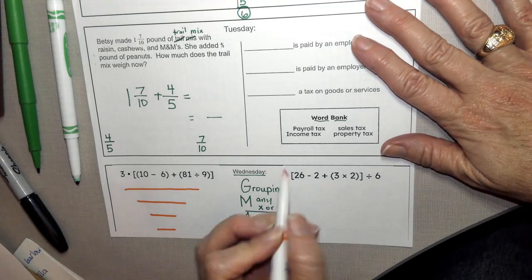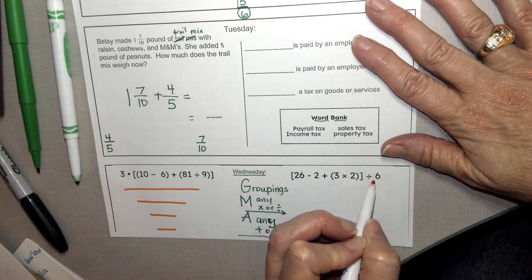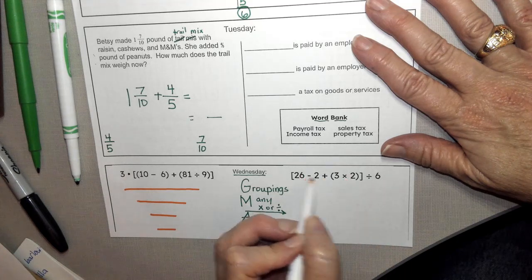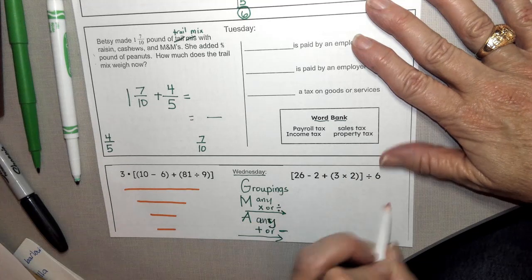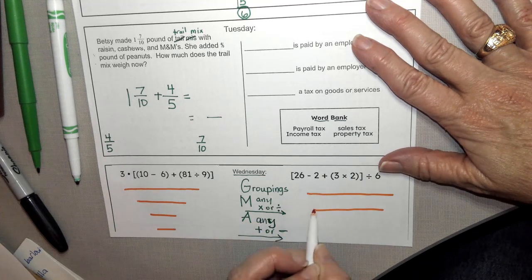Over here, I see subtraction, addition, multiplication, and division. So that's one, two, three, four. So I need four lines for solving here.